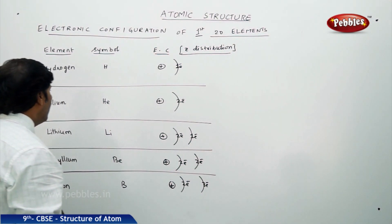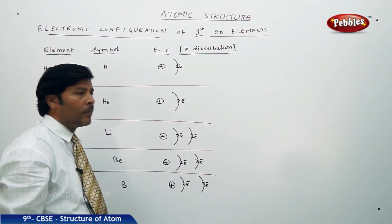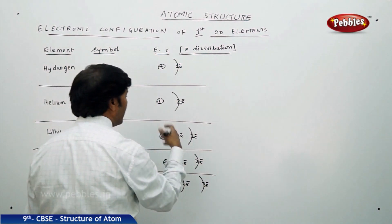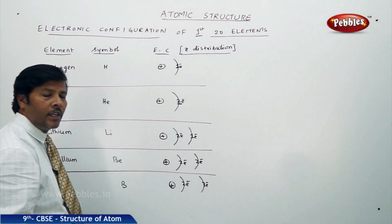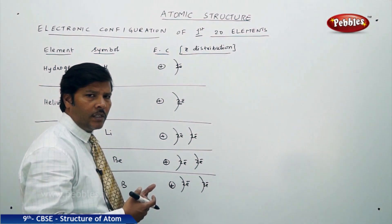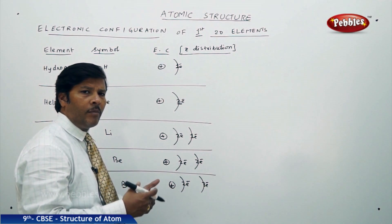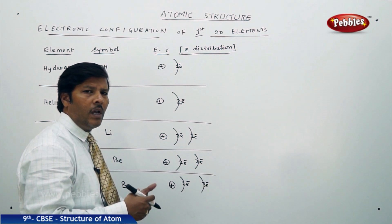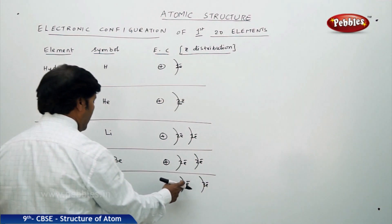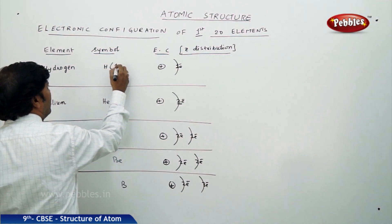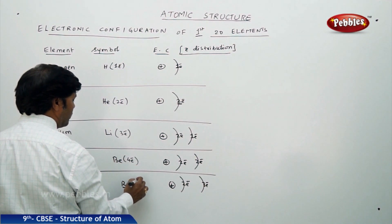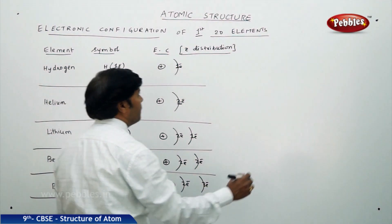Notice that hydrogen and helium have only one or two electrons — the first orbit can accommodate a maximum of two electrons. For any element with more than two electrons, the second shell is introduced, which can hold a maximum of eight electrons. So the first and second shells together can hold a maximum of ten electrons.